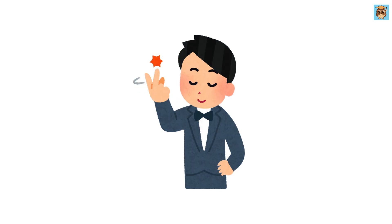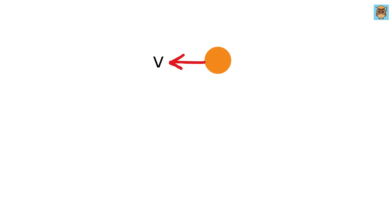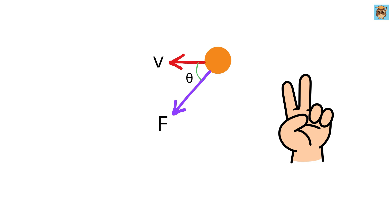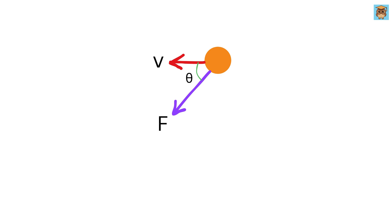Let us start with what you already know. Assume there is an object which is moving linearly at a constant velocity v. Now assume if you apply a force which is neither parallel nor perpendicular to the object's velocity — something in between, say at an angle theta — then that force will have two components.